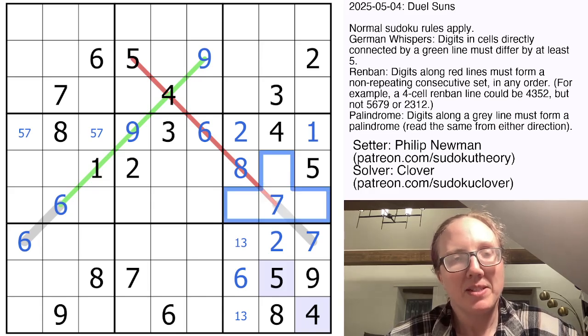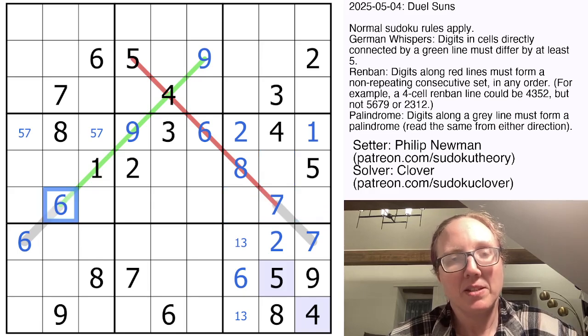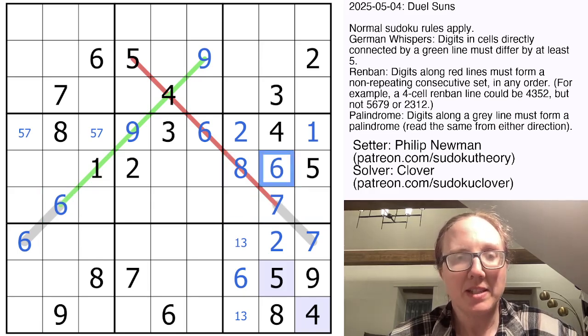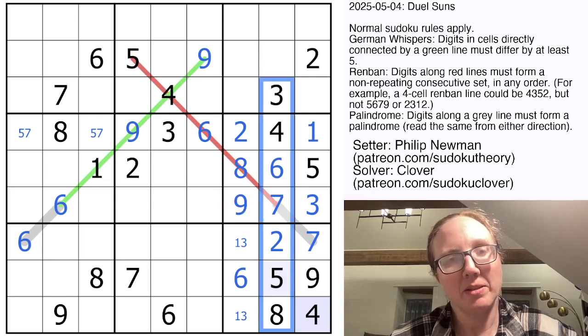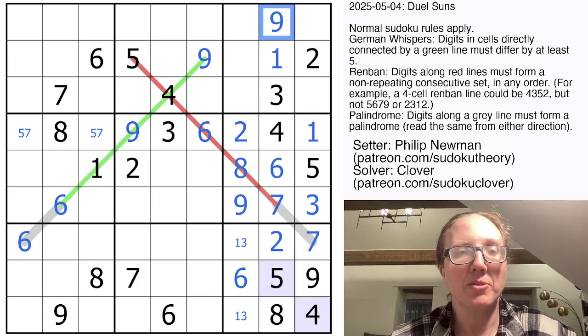Now these three digits are going to be three, six, and nine to finish the region. Six is ruled out of these cells. So that's a six, that's a three, and that is a nine. And now in this column, we still need one and nine, which will go there and there.